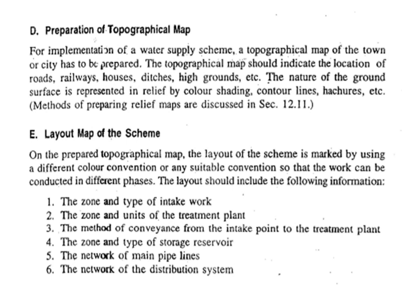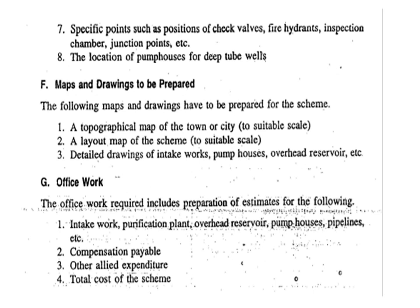For implementation of the water supply scheme, a topographic map of the town or city has to be prepared, indicating the location of roadways, railways, houses, high grounds, etc. The nature of ground surface is represented by color shading, contour lines, hatching, etc. On the prepared topographic map, the layout of the scheme is marked using suitable color conventions. The layout should include: the zone and type of intake work; the zone and unit of treatment plant; the method of conveyance from intake point to treatment point; the zone and type of storage reservoir; the network of main pipelines and distribution system; specific points such as check valves, fire hydrants, inspection chambers, junction points; and the location of pump posts for deep tube wells.